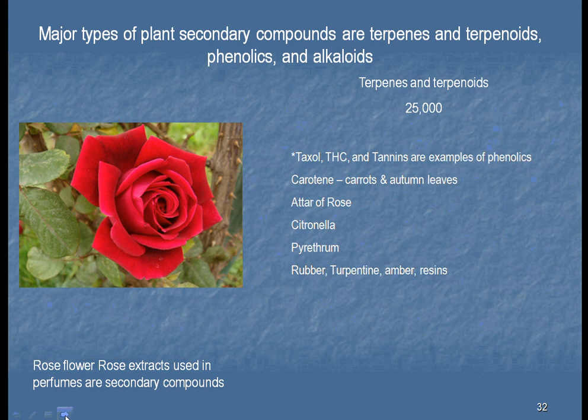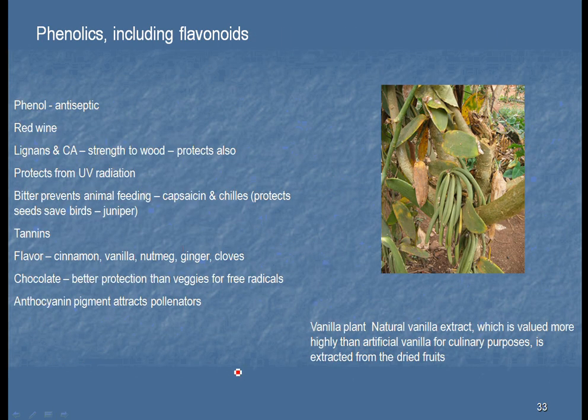We also know that carrots have carotene, which may help us with our vision. Citronella may help us stop mosquitoes from coming — it may help us stop bugs. Rubber, we all know about. These are, again, secondary compounds which may help us deal with life. Here's a picture of a vanilla bean. To this day, we're still not able to copy exactly this vanilla bean. So when you go to the store and buy vanilla, most of the time it's imitation vanilla — it's much cheaper. If you can buy that bean, it's pretty expensive.